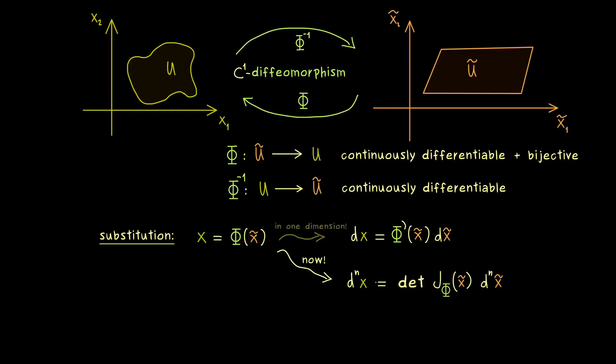Therefore the actual thing that comes into this change of variables formula is not the Jacobian itself but just the determinant. And moreover since our n-dimensional integral has no orientation we also have to add the absolute value here. And that's it.